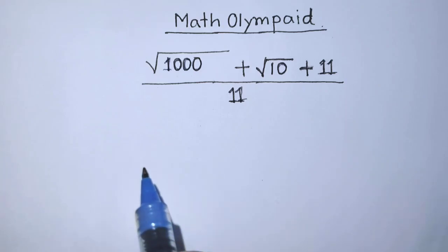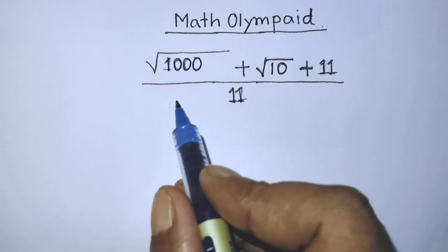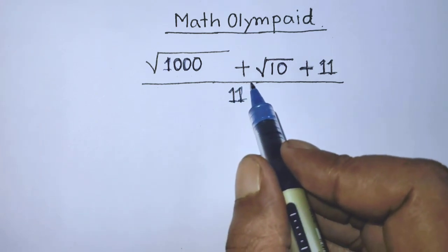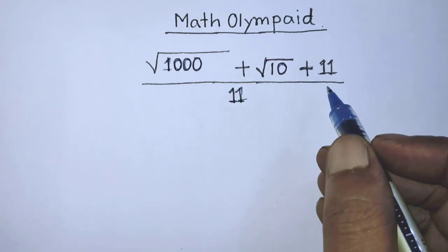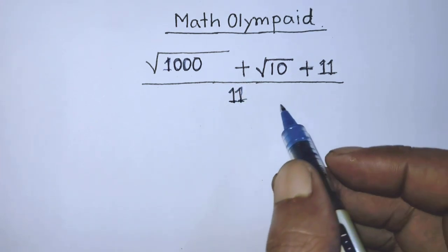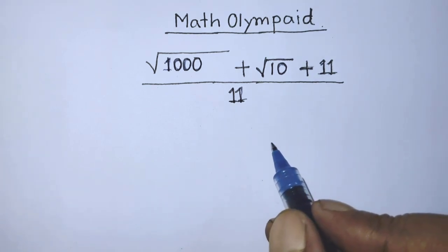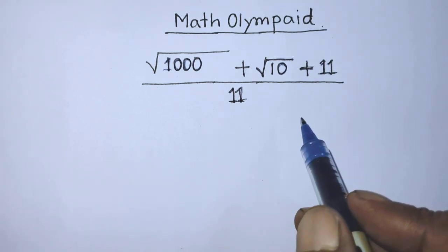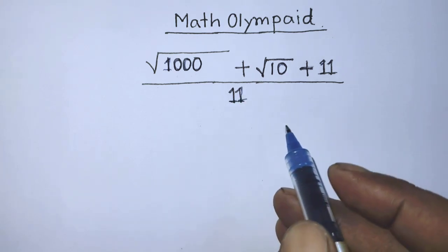Hello guys, you are welcome to solve this math problem which is square root of 1000 plus square root of 10 plus 11 over 11. Today I am telling you how to simplify this algebraic expression.